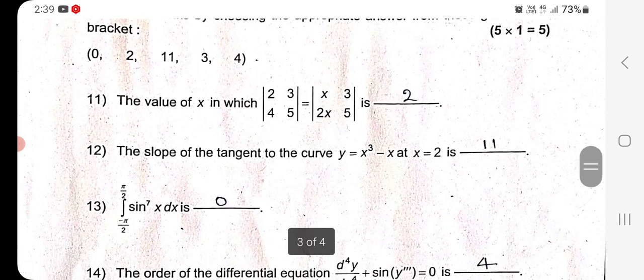Question 12: The slope of the tangent to the curve Y equals X³ minus X at X equals 2 is found by first calculating the derivative of the given function. Derivative equals 3X² minus 1. Substitute X equals 2. Therefore, the answer is 11.